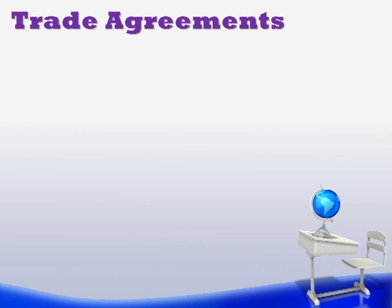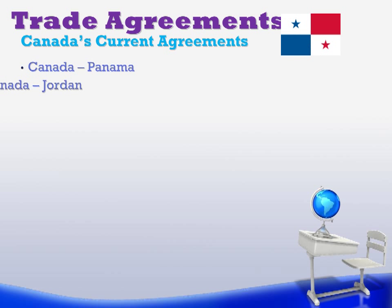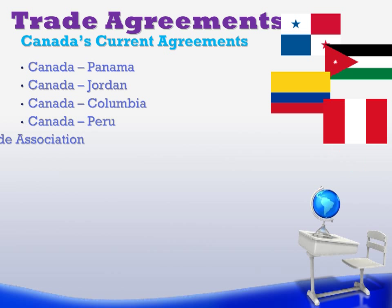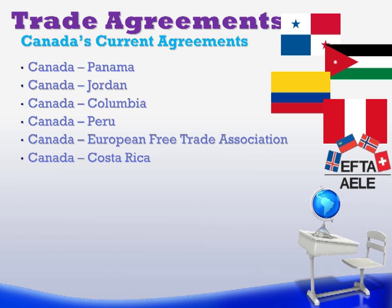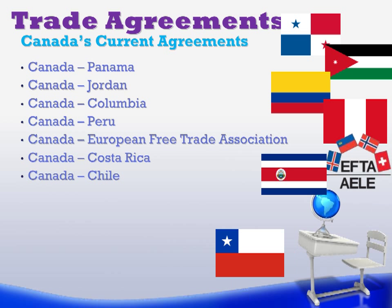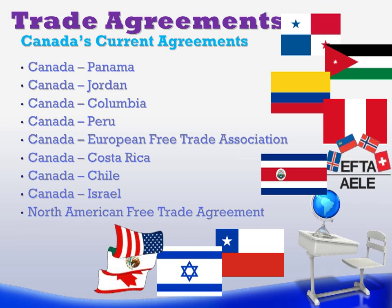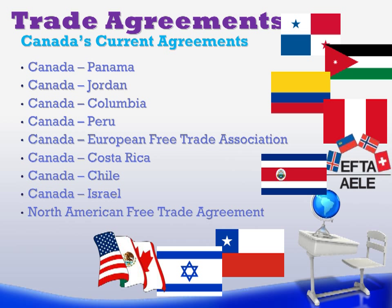When we think of Canada and trade agreements, we often think of NAFTA — but Canada has many trade agreements. There are 10 altogether: Panama, Jordan, Colombia, Peru, the European Free Trade Association (which is different from the European Union), Costa Rica, Chile, Israel, and Mexico and the United States in NAFTA. So altogether we have 10 free trade agreements. Breaking news: Canada just struck a trade agreement with the European Union, giving us an 11th trade agreement — now trading with a common market of 27 countries.